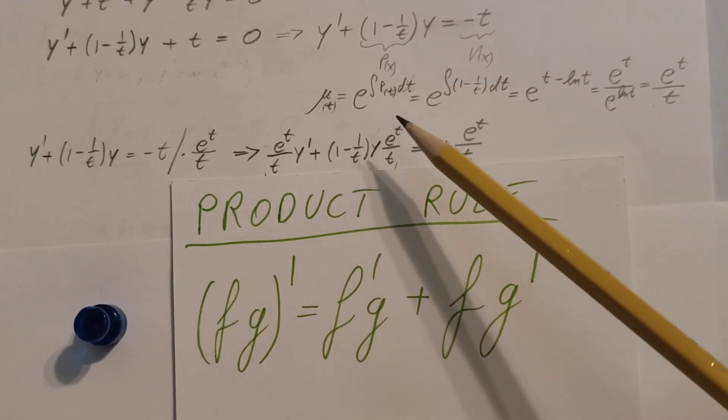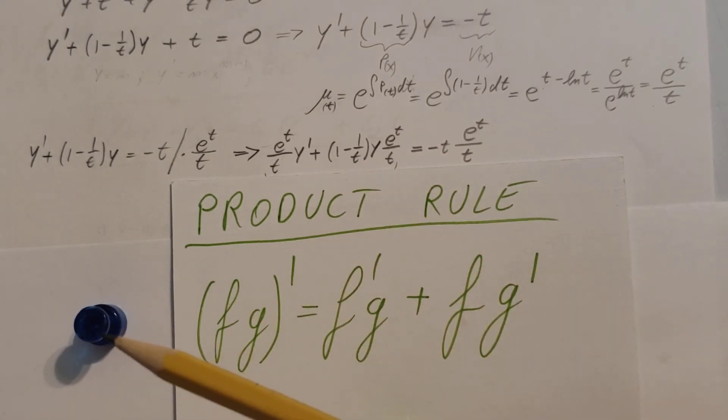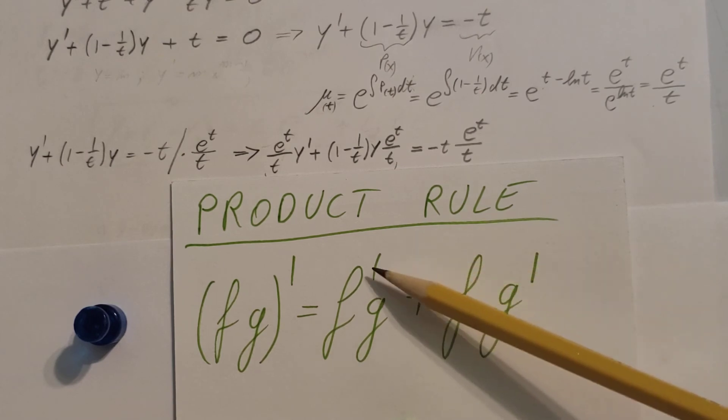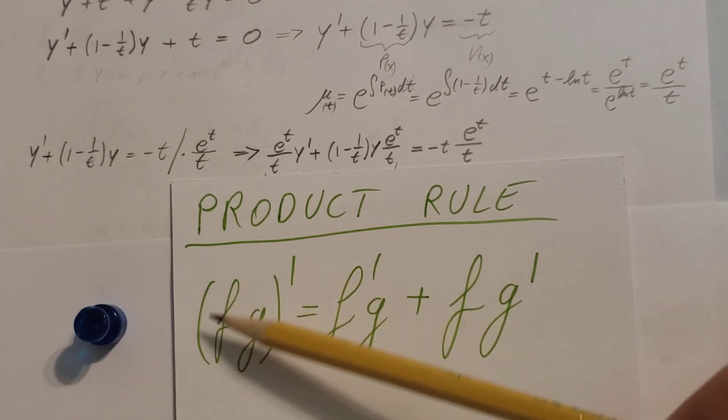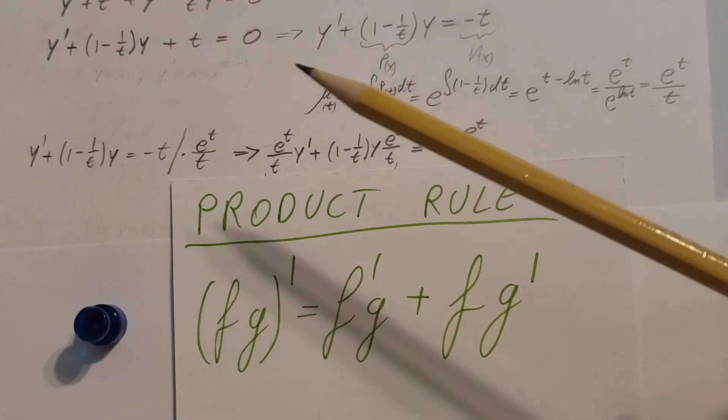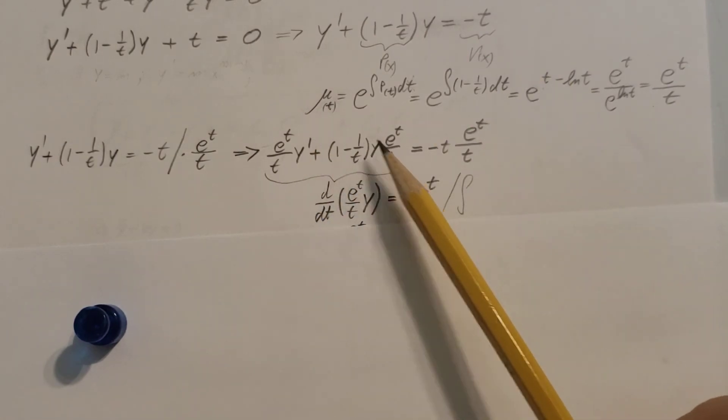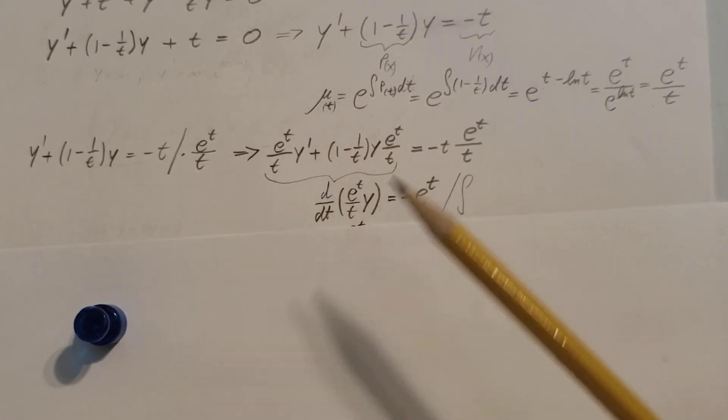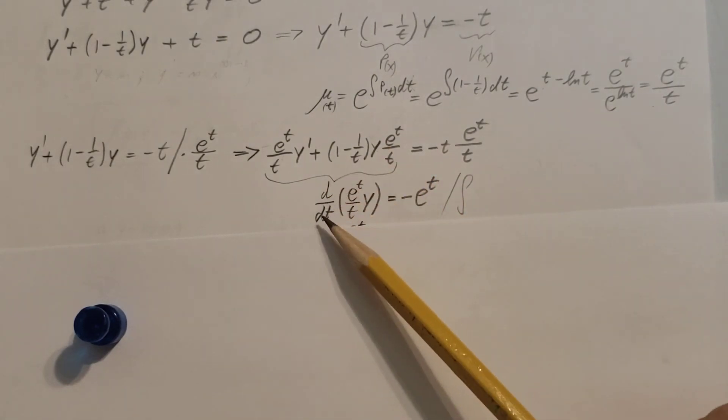Right now in this process is like thinking the product rule backwards. Here we arrive to this side, and to continue we're going to transform this back into the left hand side. And that's what's happening right here. This and this is the backwards product rule, arrive to this: derivative of e to the t over t times y.